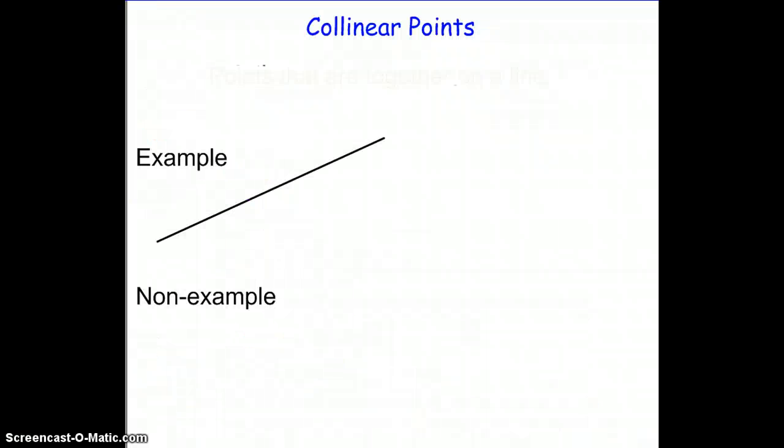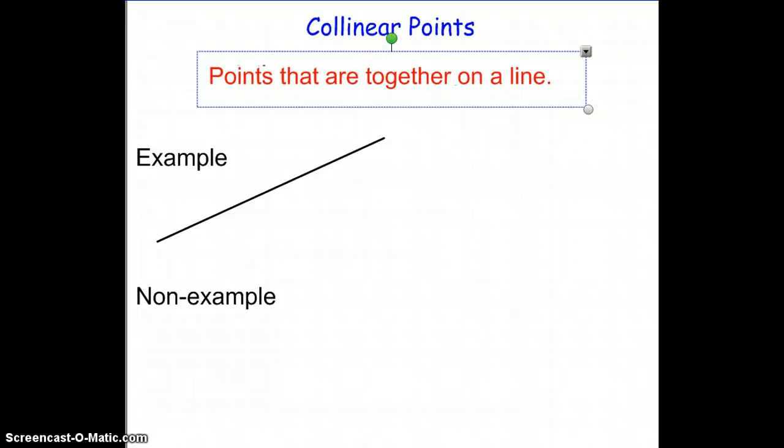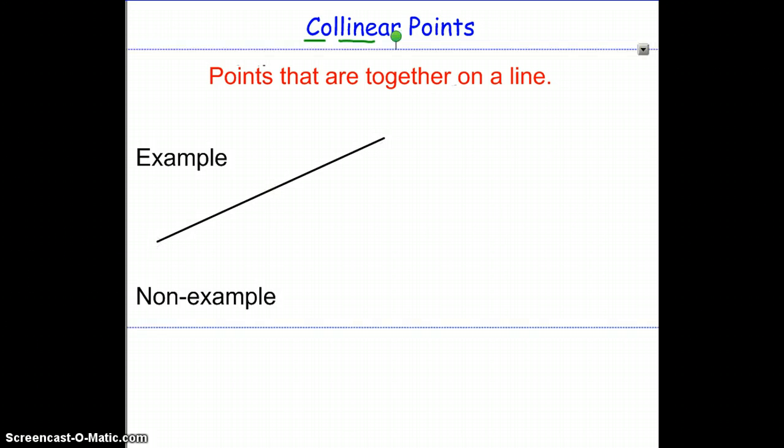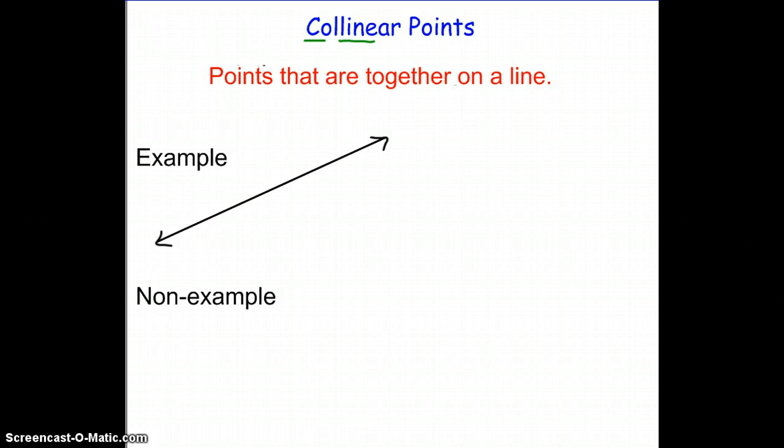Alright, let's move on. Collinear points. Well, we just said what non-collinear are. So, collinear are points that are together on a line. And you see co meaning together and you see the word line. So, together on a line. So, if we have line, we need arrows, we have line N, and perhaps we have points A, D, and M.